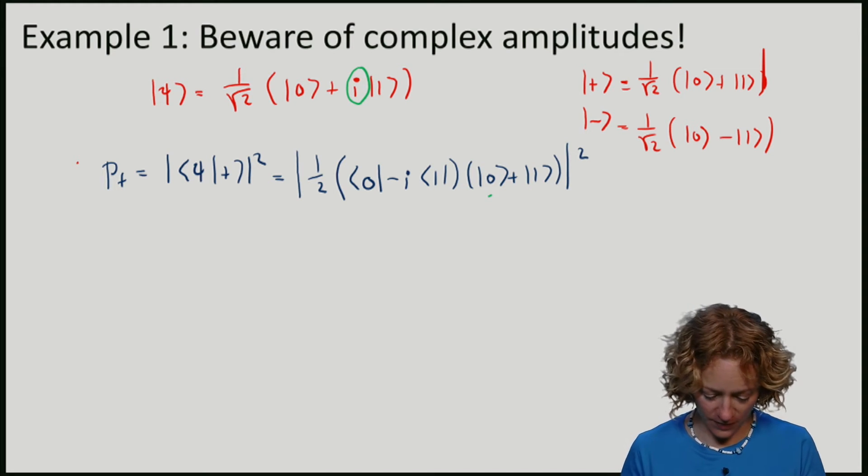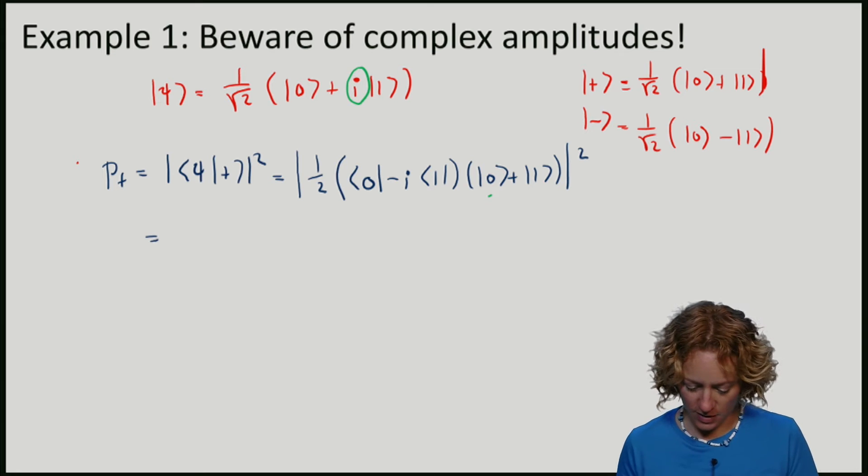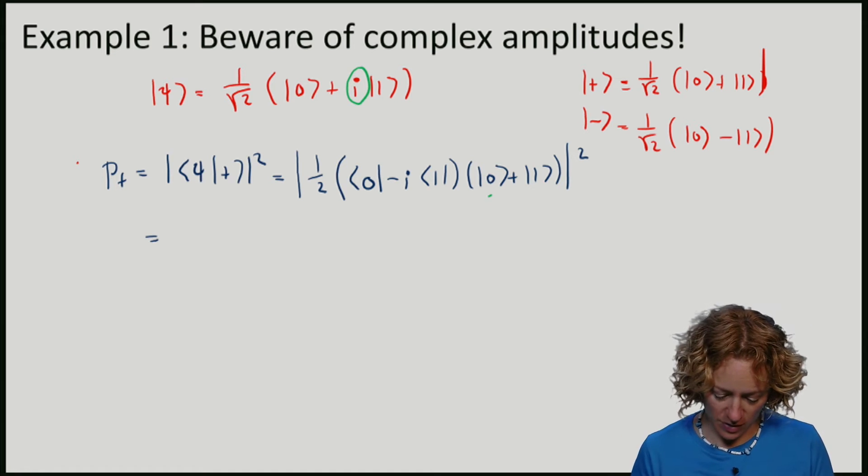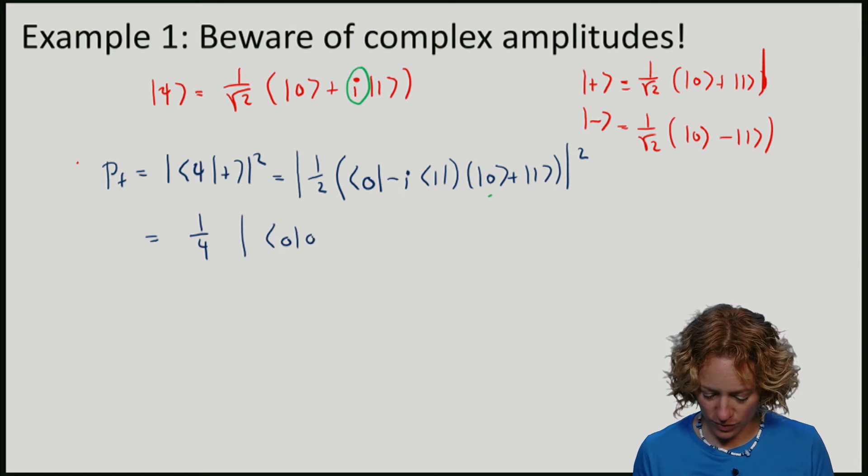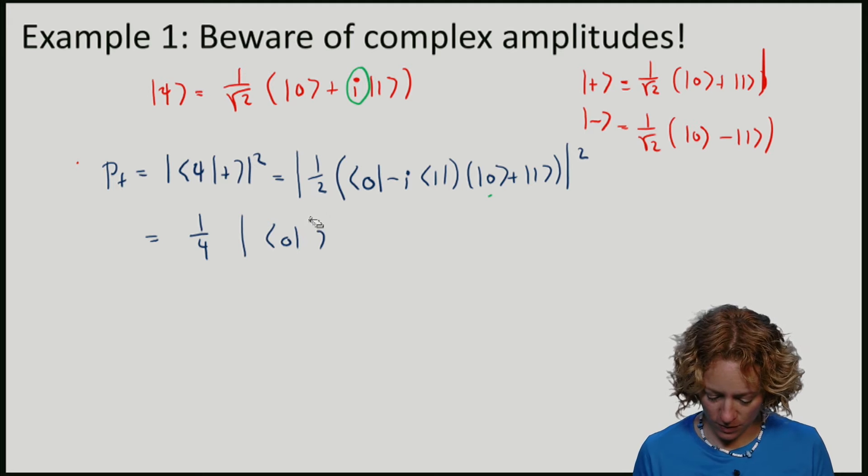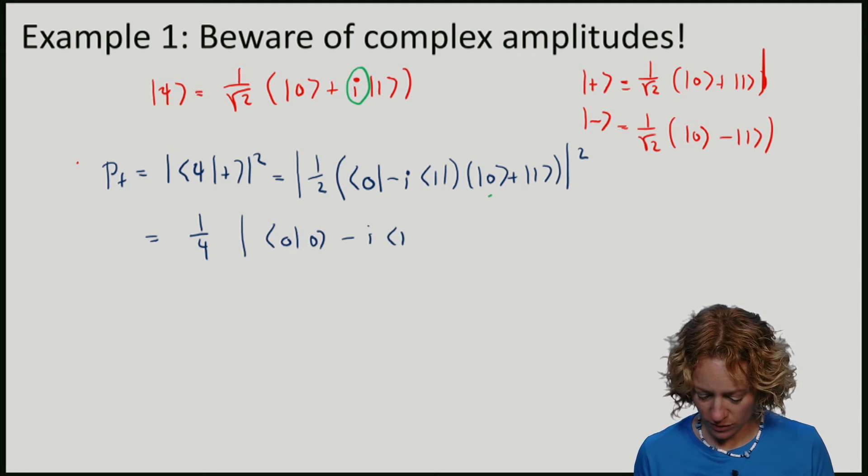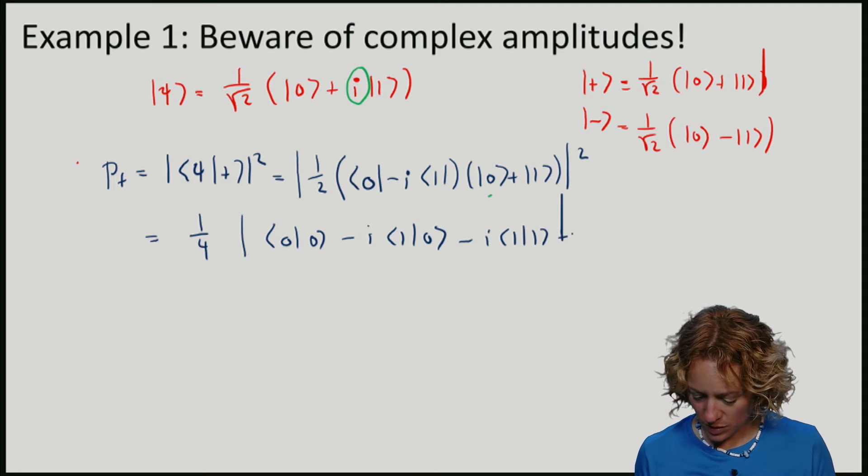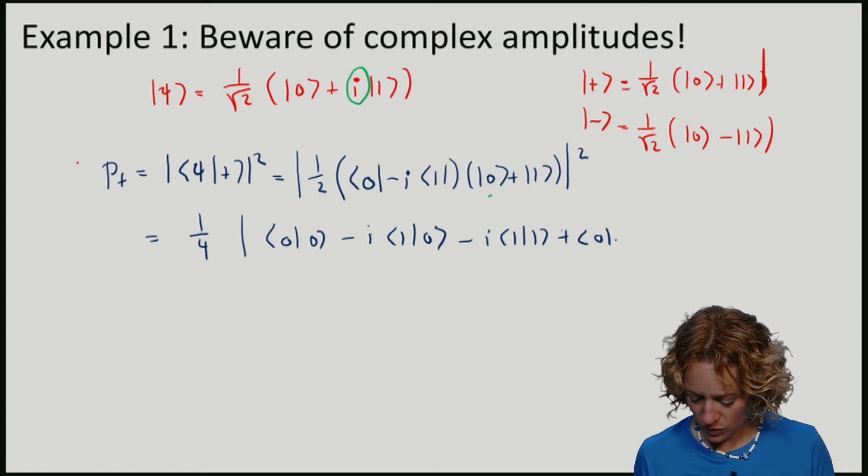So what do we get? So I have a half. I will square it, I can move it up front, I get a quarter. And here we have zero with zero, minus I one with zero, minus I one with one, plus zero with one.